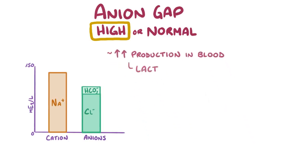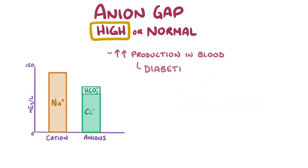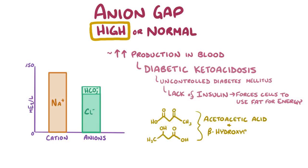One example is lactic acidosis, which is where decreased oxygen delivery to the tissues leads to increased anaerobic metabolism and the buildup of lactic acid. Another example is diabetic ketoacidosis, which can happen in uncontrolled diabetes mellitus, where the lack of insulin forces cells to use fats as primary energy fuel instead of glucose. Fats are then converted to ketoacids, like acetoacetic acid and beta-hydroxybutyric acid.